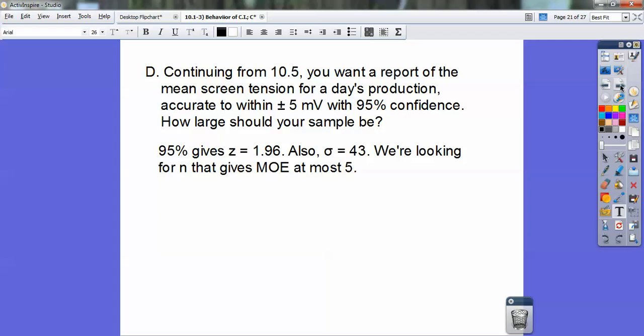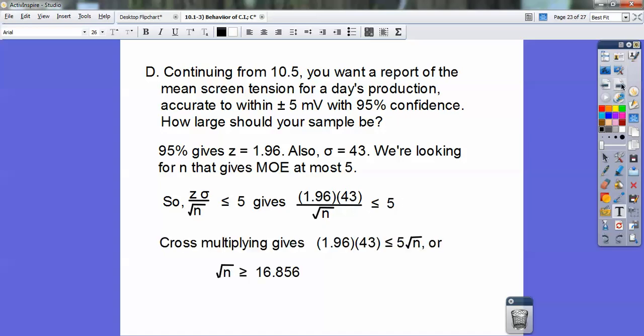95% gives me the Z-score of 1.96, and that's from yesterday's notes. They told us in the word problem that your standard deviation was 43, and you're looking for N that's going to give me a margin of error that's at most 5. Here we go, there's my formula, at most 5, less than or equal to. Plug in the numbers, and then I'm going to cross-multiply, multiply both sides by the square root of N.